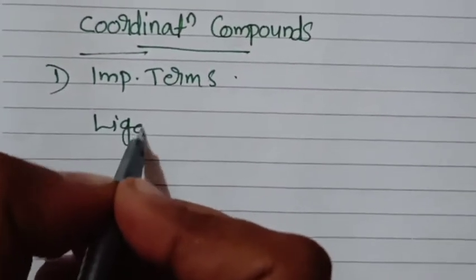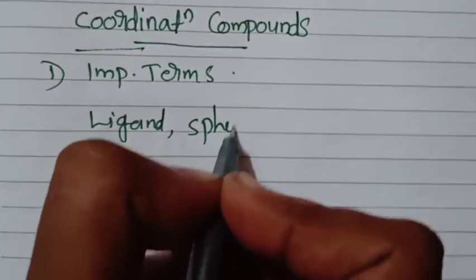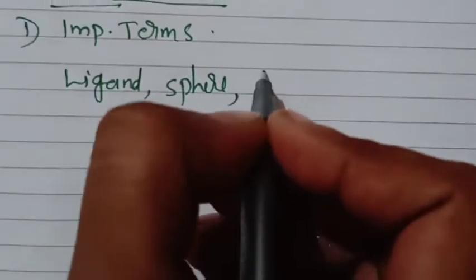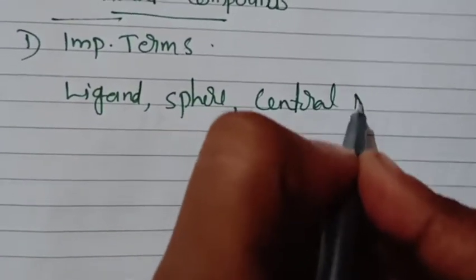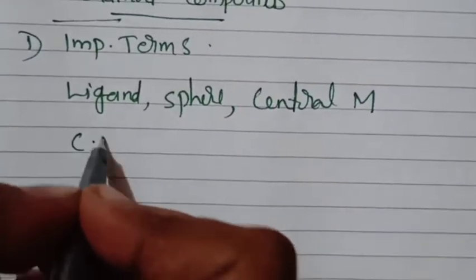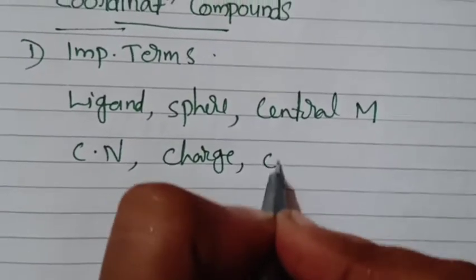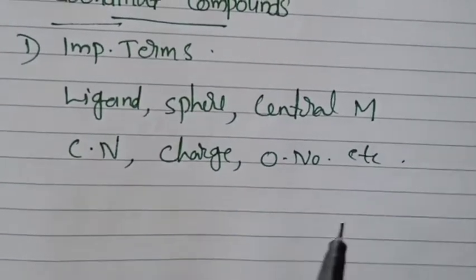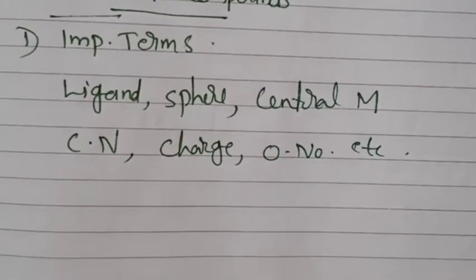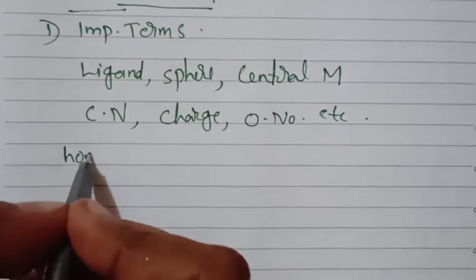The first basic term is ligand — compounds which have a lone pair of electrons are called ligands. The second term is coordination sphere. The third is central metal. We will also cover coordination number, the charge of the central metal, and the oxidation number.